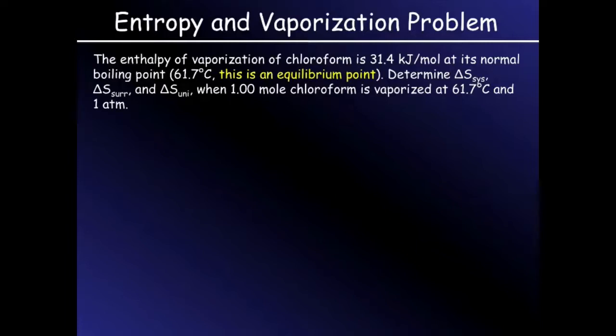The enthalpy of vaporization of chloroform is 31.4 kilojoules per mole at its normal boiling point, normal referring to the temperature required for it to boil at one atmosphere, 61.7 degrees Celsius.